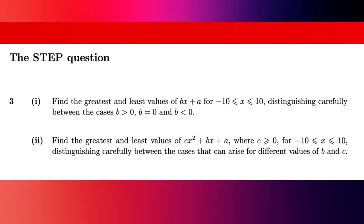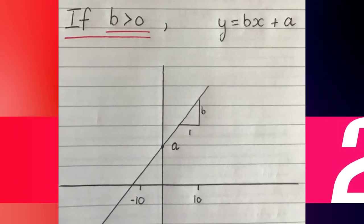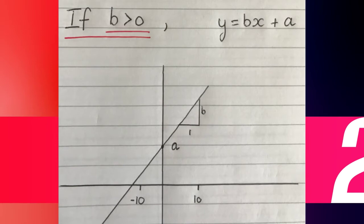Let's do the first case where b is greater than zero. I've drawn a graph of that, and you can see clearly that if b is greater than zero we must have a positive gradient, and a is going to be the y-intercept — the gradient is b because it's b over one. So the maximum value of y occurs when x equals 10, giving a maximum of 10b plus a, and the minimum value occurs when x equals minus 10, giving minus 10b plus a.